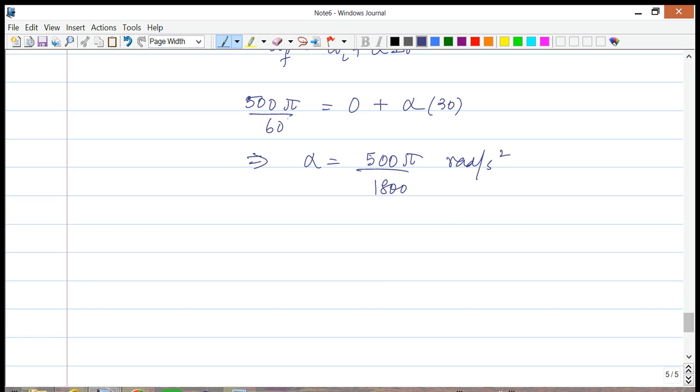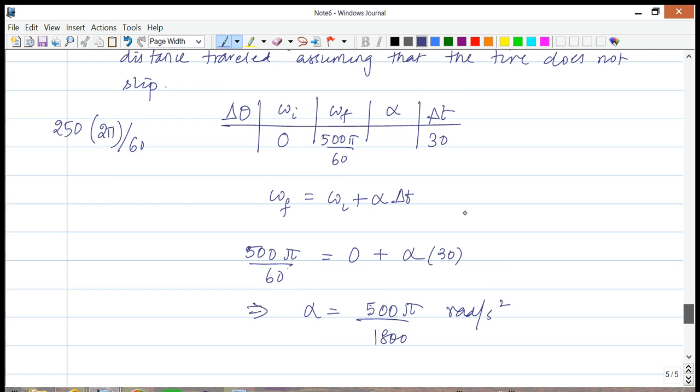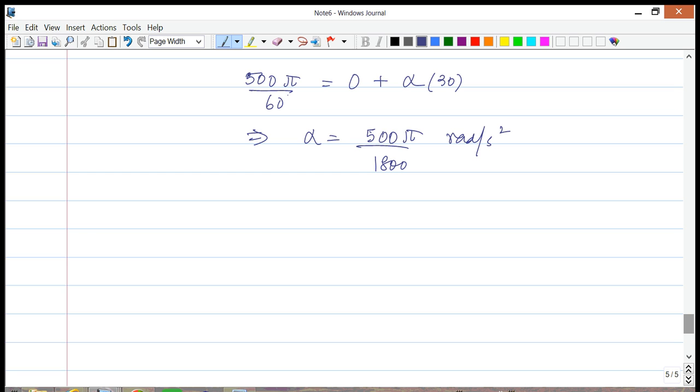We can simplify this and obtain the number. So this gives us alpha. Now what we also want to know is finding the distance traveled. You can't really directly find the distance from here, so what we need to first do is find the angular displacement.